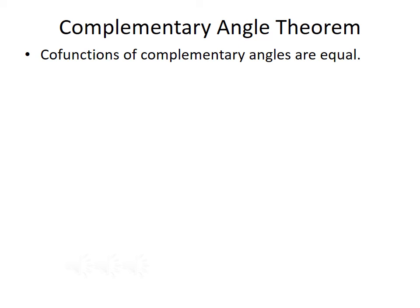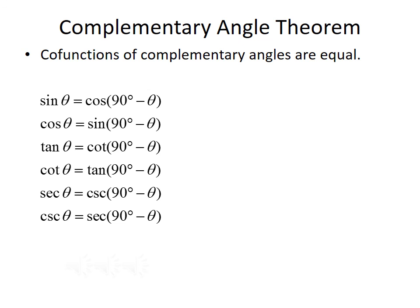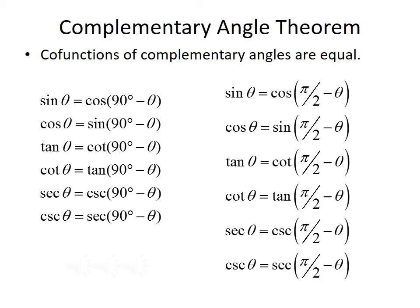In addition to our basic trigonometric identities, another useful tool is the complementary angle theorem, which says that co-functions of complementary angles are equal. The co-function pairs are sine with cosine, tangent with cotangent, and secant with cosecant. Recall that complementary angles add up to 90 degrees. So: sine of theta equals cosine of (90 minus theta); cosine of theta equals sine of (90 minus theta); tangent of theta equals cotangent of (90 minus theta); cotangent of theta equals tangent of (90 minus theta); secant of theta equals cosecant of (90 minus theta); and cosecant of theta equals secant of (90 minus theta). The same holds in radians, replacing 90 degrees with pi over 2.